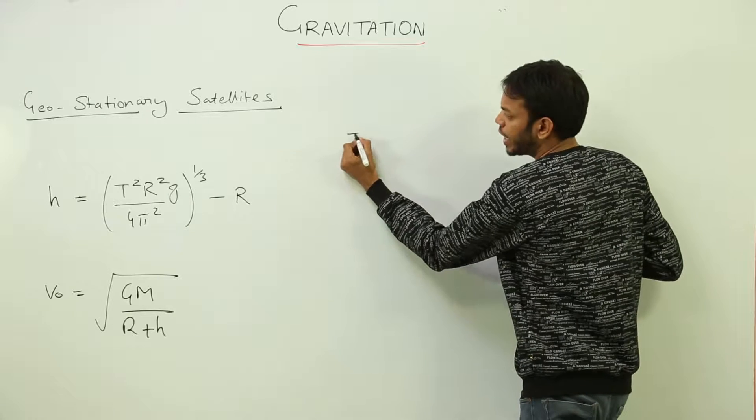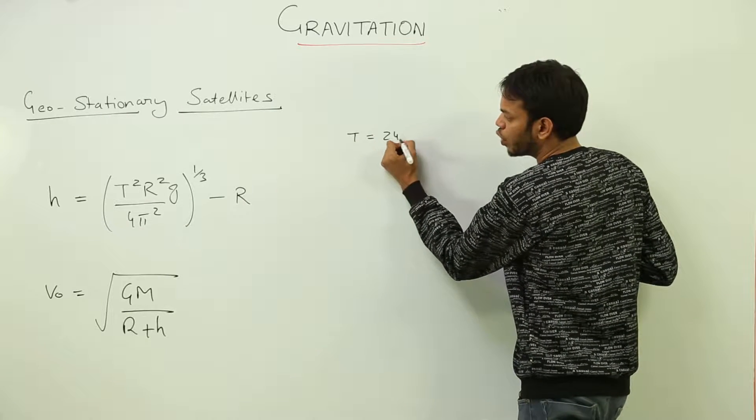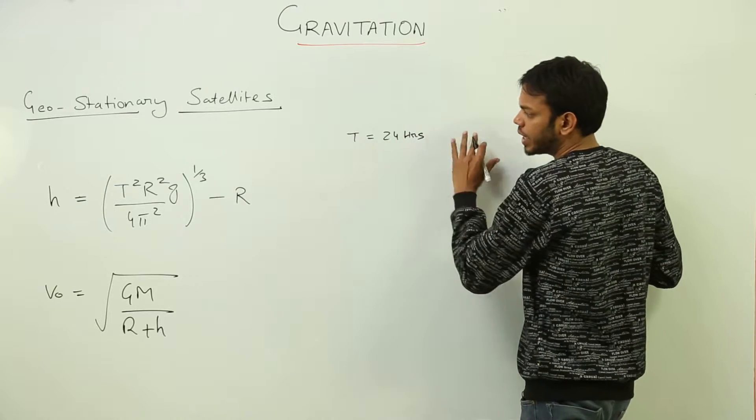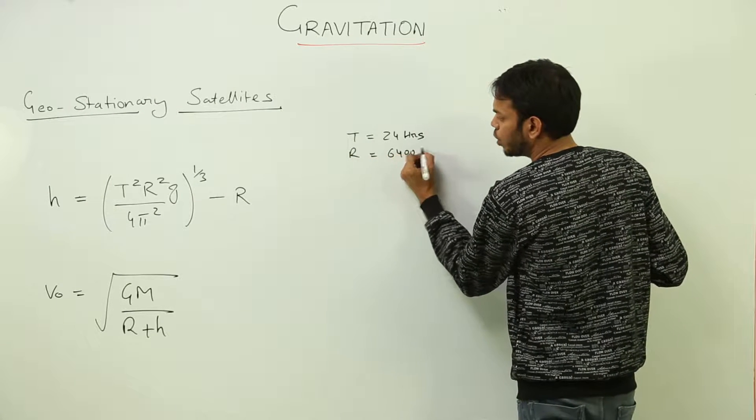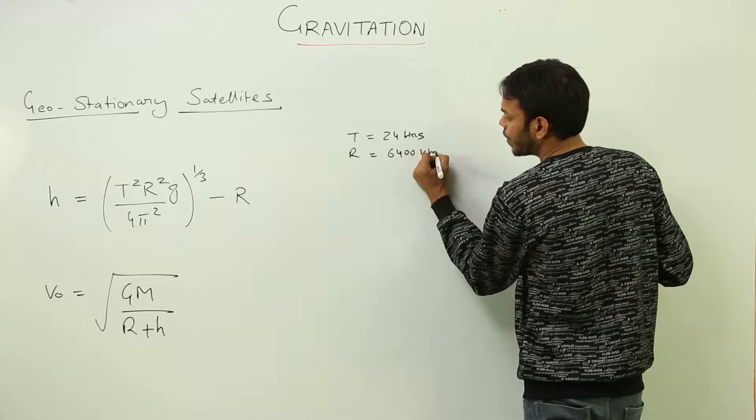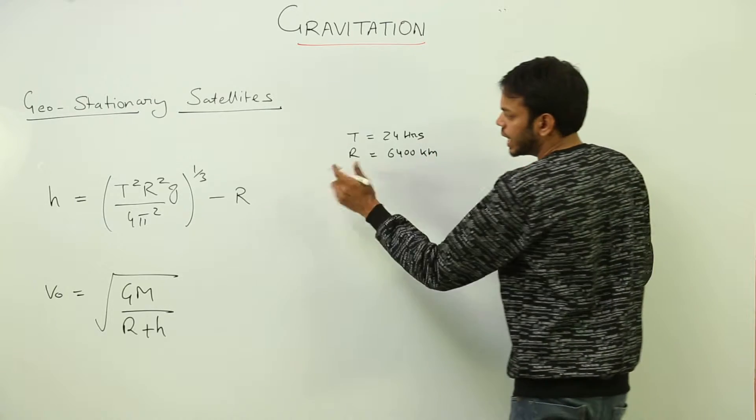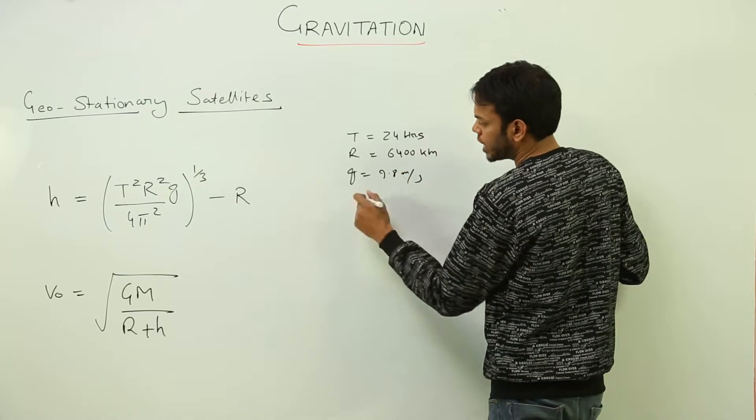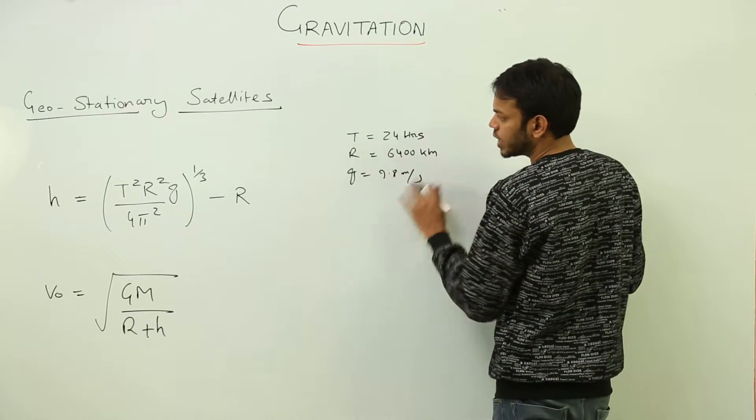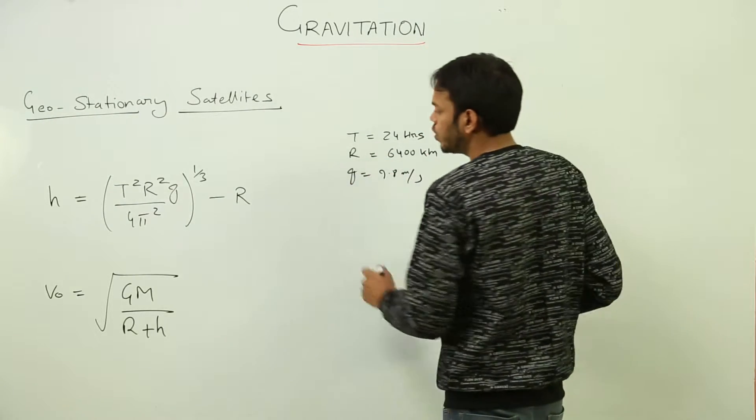For time period, put the value to be 24 hours and convert it into seconds. Then R is 6400 kilometers, which will be converted into meters. Then g = 9.8 meters per second squared, 4π, and radius of Earth. By putting all these values, the